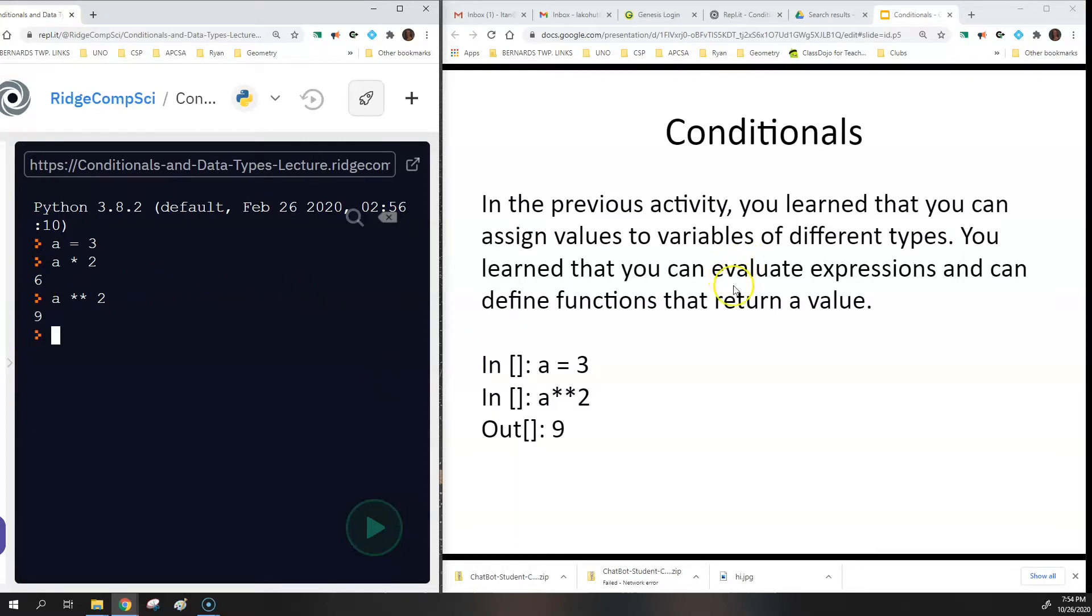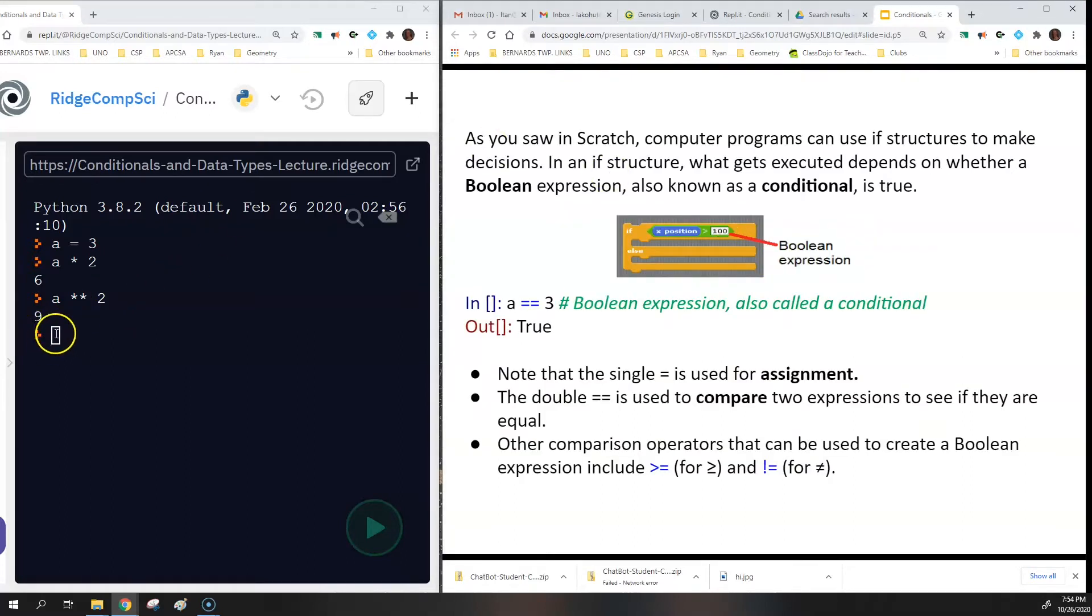However, there's a different type of equals operator, and that is the double equal operator. So if I did A equals equals, then that would return false. This is an example of a Boolean expression. A Boolean expression you've seen before in Scratch. It's what goes inside of an if block, and it's also known as a conditional. So a Boolean expression can either be true or false, and then a result will happen based on that Boolean. So equals equals is one way to check if something is equal to something else. Double equals checks if it's equal. Single equals assigns the value.